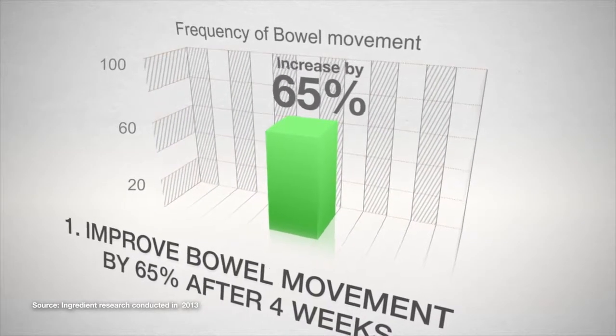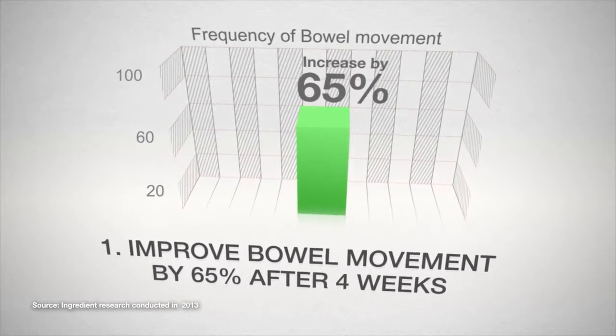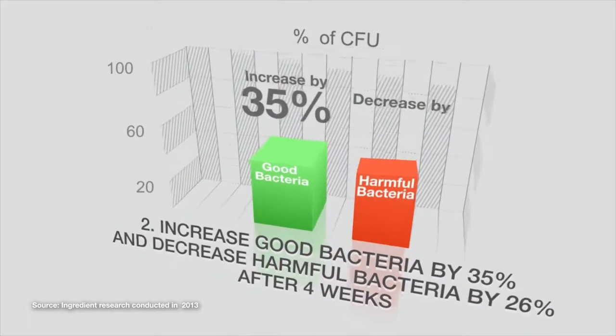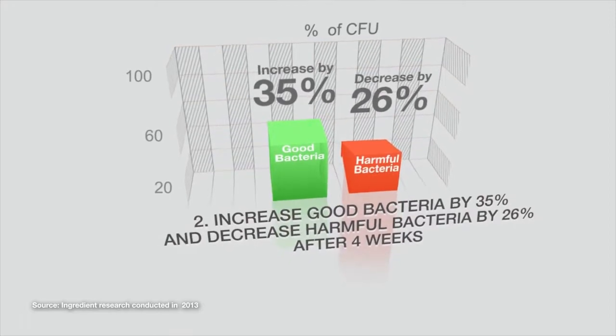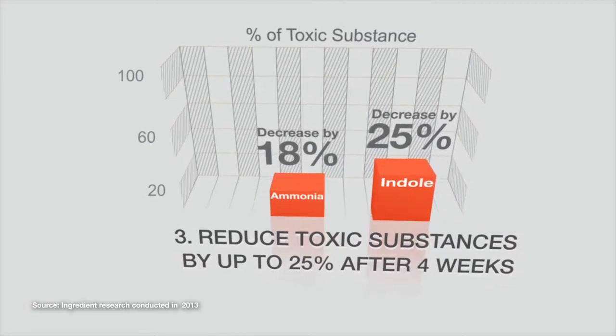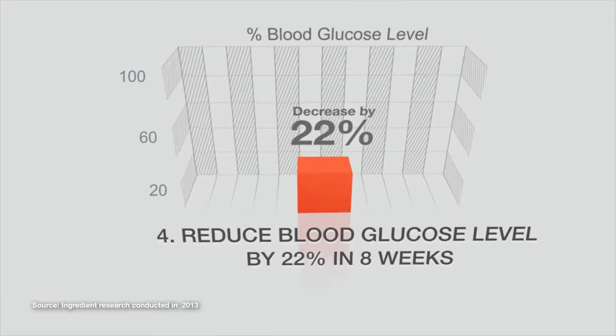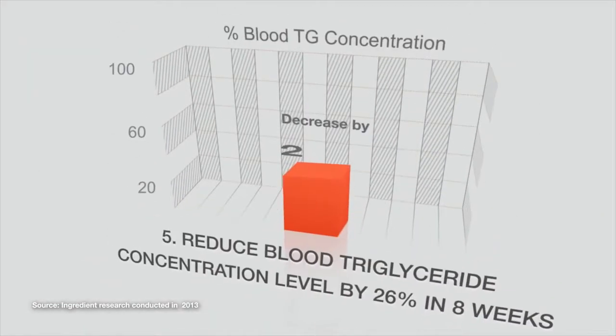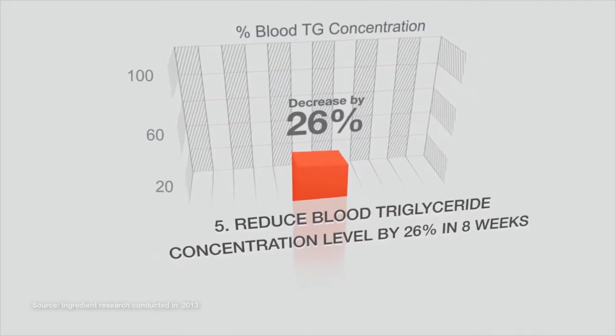Research has found that lactose, GOS, and soy metabolite formulation helps to: 1. Improve bowel movement by 65% after 4 weeks. 2. Increase good bacteria by 35% and decrease harmful bacteria by 26% after 4 weeks. 3. Reduce toxic substances by up to 25% after 4 weeks. 4. Reduce blood glucose level by 22% in 8 weeks. 5. Reduce blood triglyceride concentration level by 26% in 8 weeks.